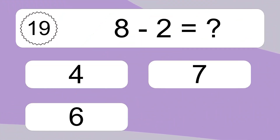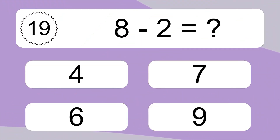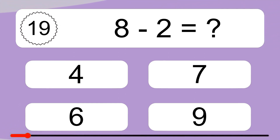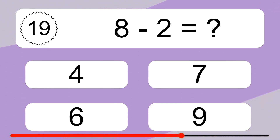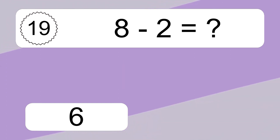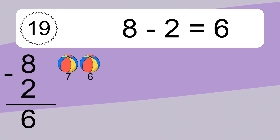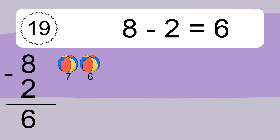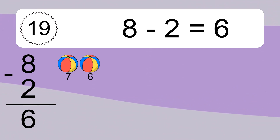8 minus 2 equals what? 8 minus 2 equals 6. Let's count it: 7, 6.